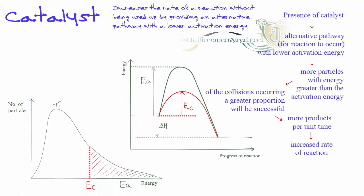Finally, let's revisit how a catalyst works — increasing the rate of the reaction without being used up by providing an alternative pathway with a lower activation energy. On the enthalpy profile diagram, this is an exothermic reaction with a negative delta H. In the presence of a catalyst, the activation energy is reduced — shown by the red curve — providing an alternative pathway with a lower activation energy, allowing more particles to have energy greater than the activation energy, resulting in more collisions, of which a greater proportion will be successful, producing more products and increasing the rate of the reaction.